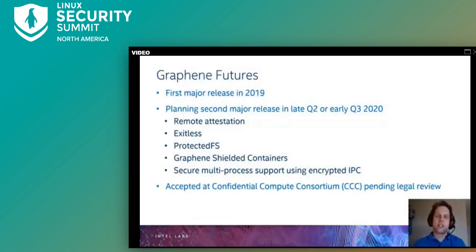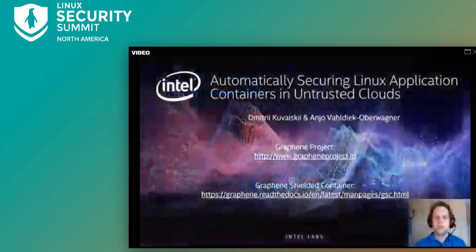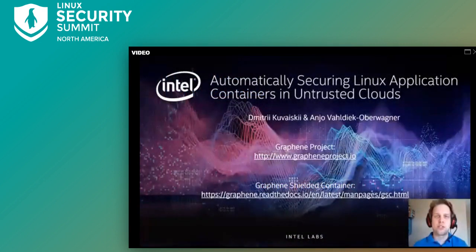I'd like to highlight the current and future directions of Graphene. Graphene had its first major release last year and we are currently finishing our next release. This release includes remote attestation, exit lists, system calls, protected FS, graphene shielded containers, and secure multiprocess support using encrypted IPC. In addition, Graphene has been accepted to the Confidential Computing Consortium, which is part of the Linux Foundation. Thank you very much — I invite you to ask questions, and I've put up links if you want to know more about Graphene.